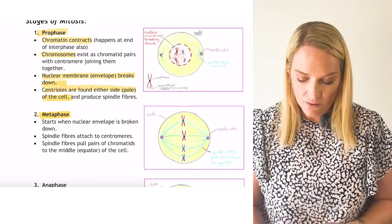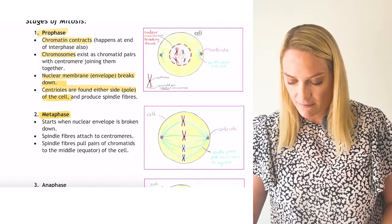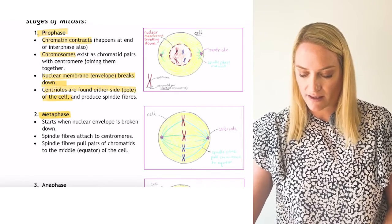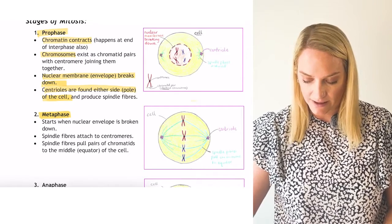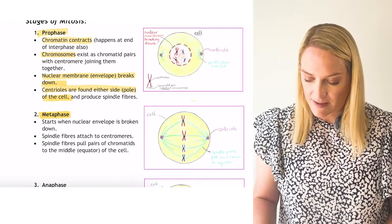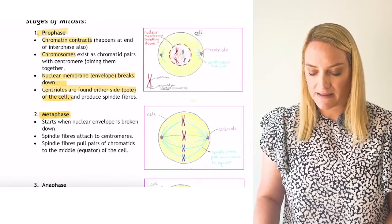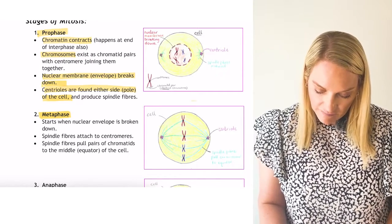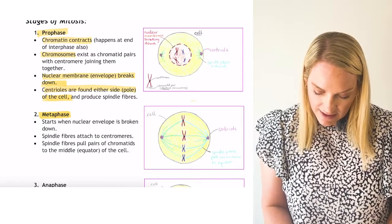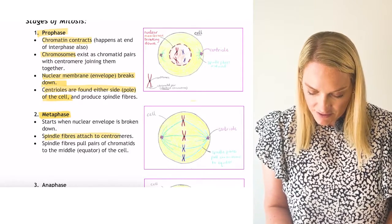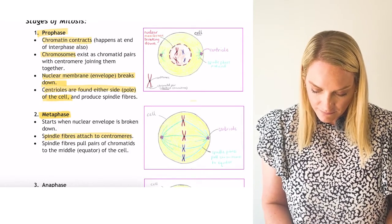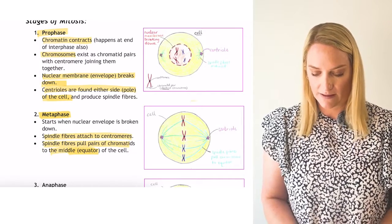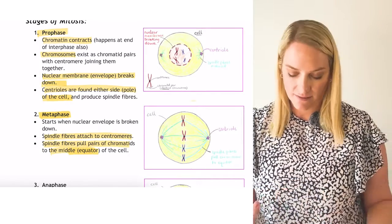In metaphase — the second phase — chromosomes line up along the middle, along the equator. Spindle fibers attach to the centromere. This begins after the nuclear membrane has broken down. The spindle fibers pull the chromatids to the middle, to the equator — that is metaphase.